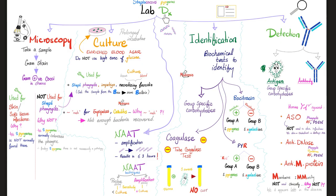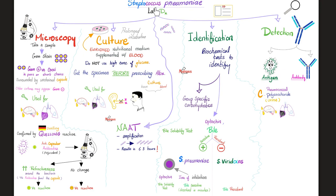Remember how we diagnosed Streptococcus pyogenes? It was PYR-positive, beta-hemolytic, and had the M protein. And Streptococcus pneumoniae? Gram-positive cocci in pairs or short chains, alpha-hemolytic, sensitive to optochin, and sensitive to bile.